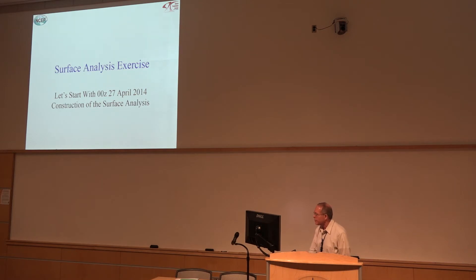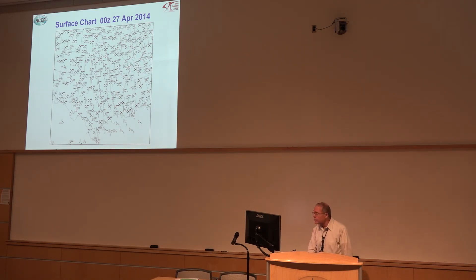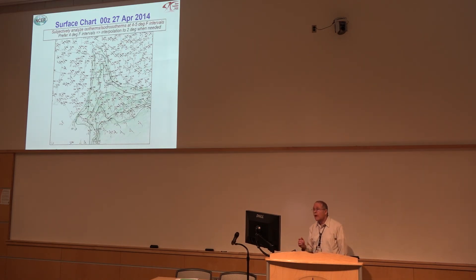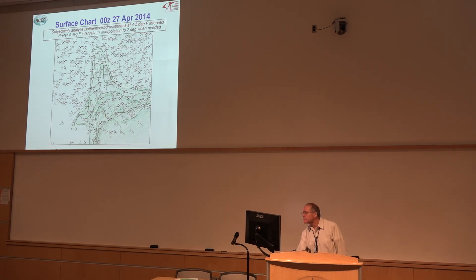This is a zoom-in of the surface chart from 0Z on the 27th. You had done upper air charts from 0Z on the 28th, so I want to show you what happened 24 hours earlier. This is how I would have gone about doing the analysis — I would have started with the isodrosotherms and put those on here, so I can start to see where the moist axis is, where the moisture source is, how high and what the magnitude of the moisture is. I can also see dew points in the 60s and dew points in the teens with hot temperatures — so that tells me there's something going on at the west edge of this moisture, like a dry line in through here.